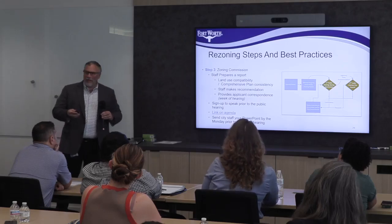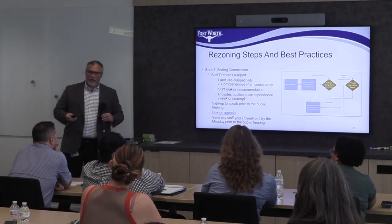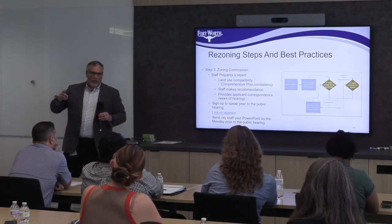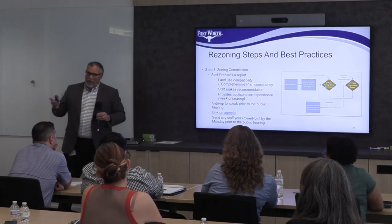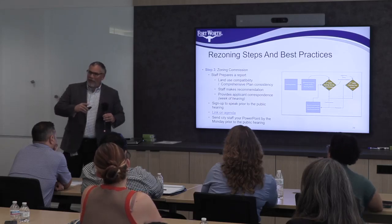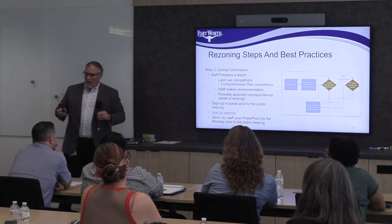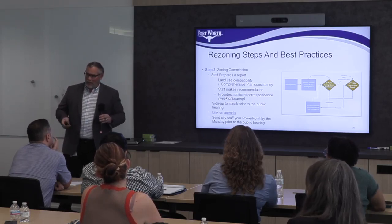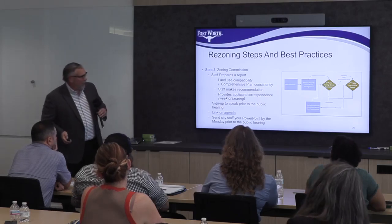Bob will have five minutes to speak. Opposition will have seven total minutes to speak — that's different from council. At council, everyone gets three minutes. But at the zoning commission, the applicant gets five minutes, opposition gets seven, and then the applicant gets two minutes for rebuttal — so roughly seven and seven for speaking and making your case.